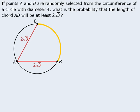Since we want to find the probability that the length of chord AB will be greater than or equal to 2 root 3, we essentially want to find the probability that point B lies on the gold portion of the circumference.